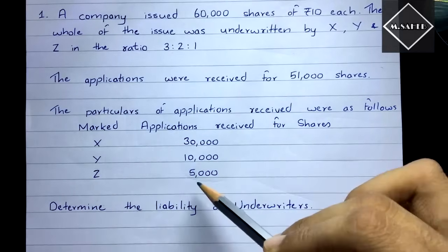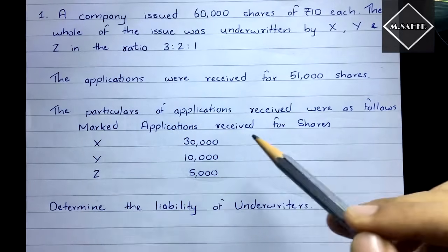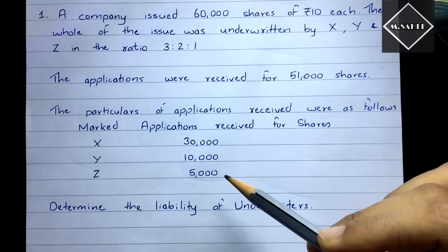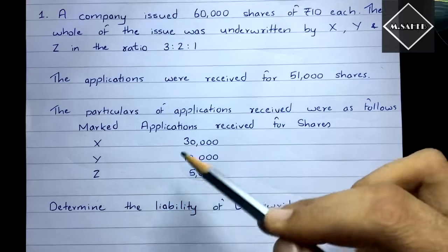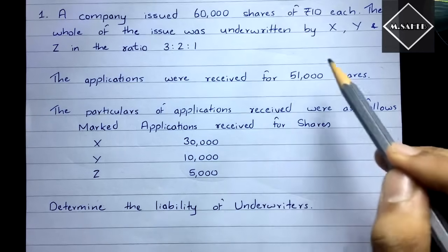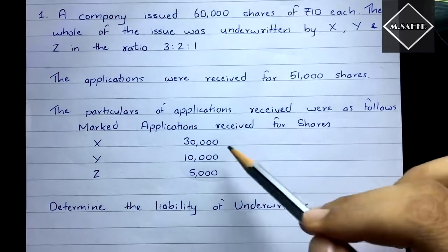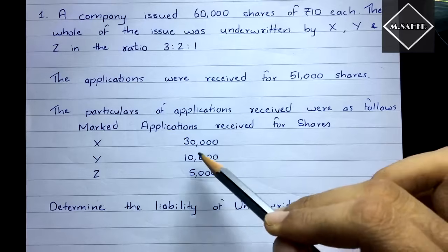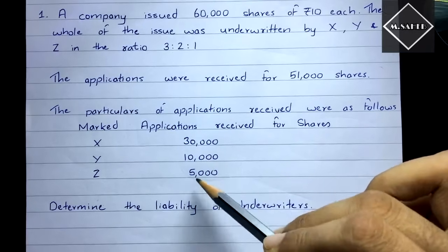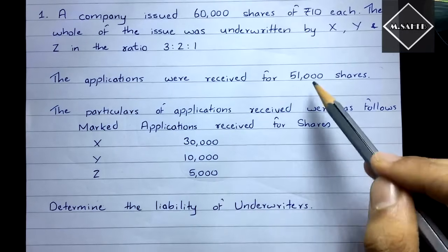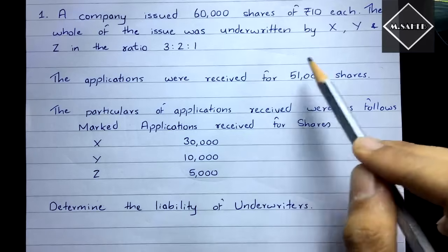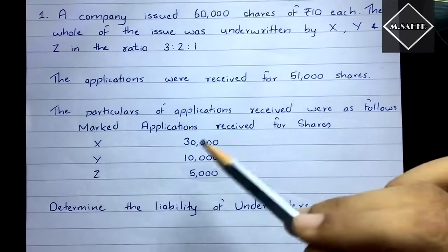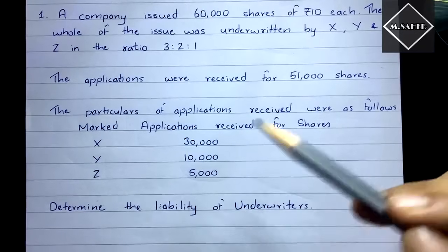The marked applications are: 30,000 through X, 10,000 through Y, and 5,000 through Z. In total that is 45,000 marked applications. However, the company actually received 51,000 applications, so there is a difference of 6,000 — those are the unmarked applications, which came through the company's own efforts.